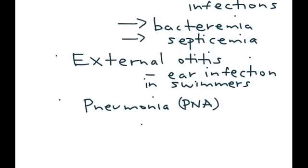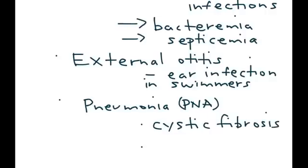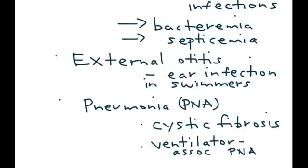Pneumonia occurs in two key populations: patients with cystic fibrosis — that's an important one — and patients on a ventilator, known as ventilator-associated pneumonia. These are some of the highest-yield medical conditions associated with Pseudomonas.